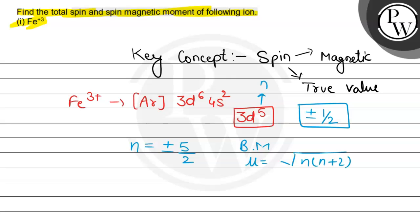If we put the value of n as 5 here, it is equal to root 35 Bohr magneton. So this is the required answer. Hope you understood it well and best of luck.